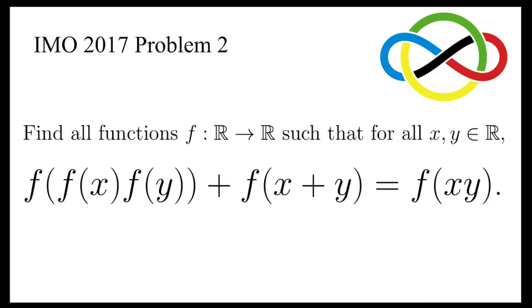Let's take a look at this problem, taken from the International Mathematical Olympiad 2017. Find all functions f that maps the set of real numbers to itself, such that for all real numbers x and y, f(f(x)·f(y) + f(x+y)) = f(xy).